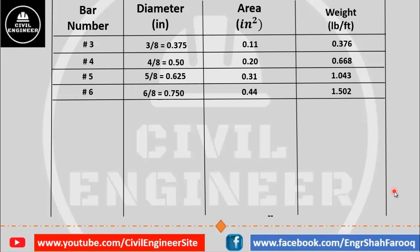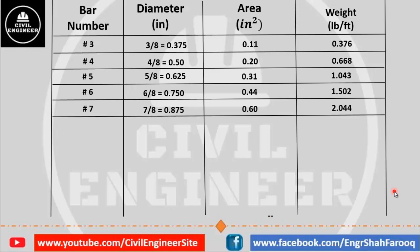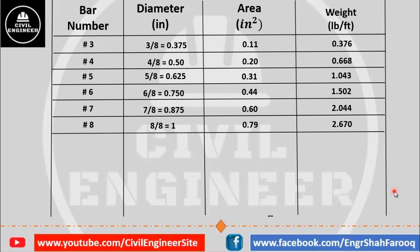The next bar is number seven: diameter is 7/8 inches, area is 0.60 square inches, and weight is 2.044 pounds per foot. The next bar is number eight: diameter is 8/8 or 1 inch, cross-sectional area is 0.79 square inches, and weight is 2.67 pounds per foot. The next bar is number nine: diameter is 9/8 or 1.125 inches, cross-sectional area is 1 square inch, and weight is 3.40 pounds per foot.